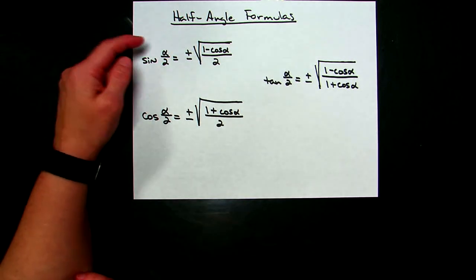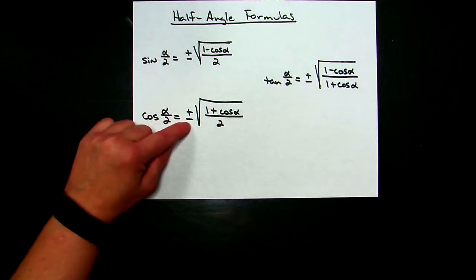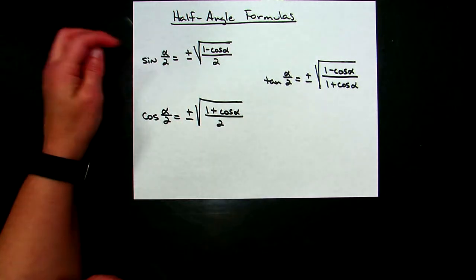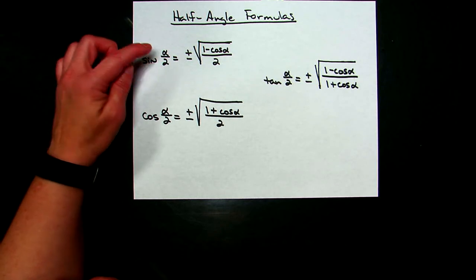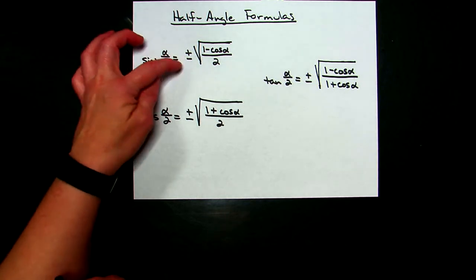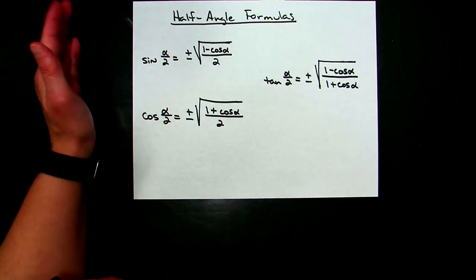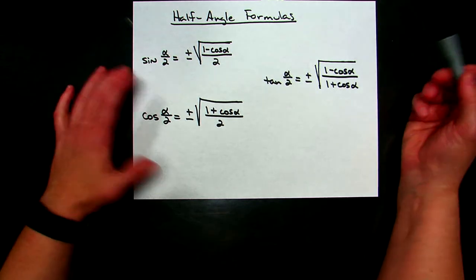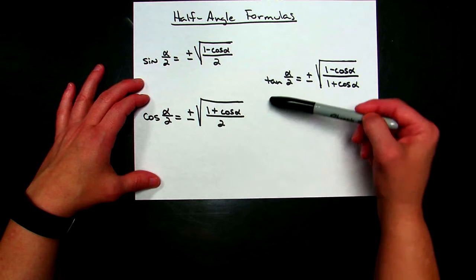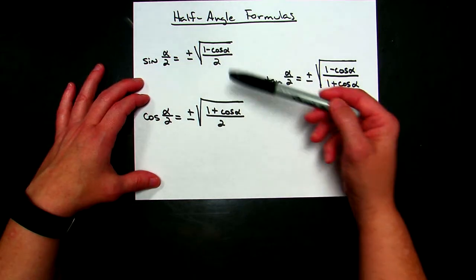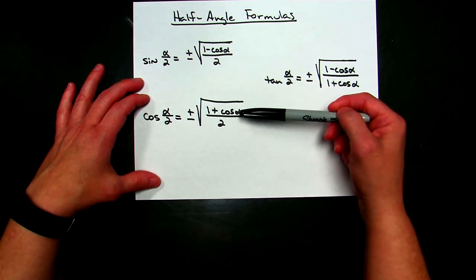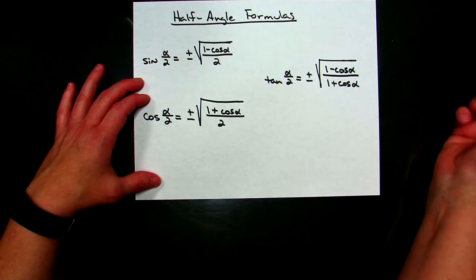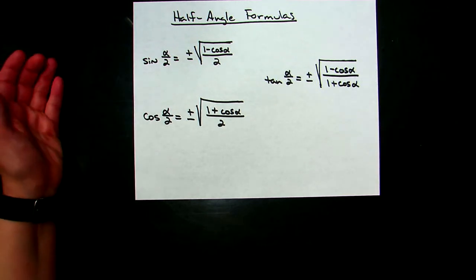As you can see, each of the formulas has a plus or minus in front. After we determine what our alpha angle is and which quadrant it lies in, that will tell us whether to use a positive or negative sign. If you're trying to memorize these, there are some nice patterns — writing them in order: sine, cosine, tangent — you can take the numerator from the sine formula and the numerator from the cosine formula, and that creates the tangent formula.